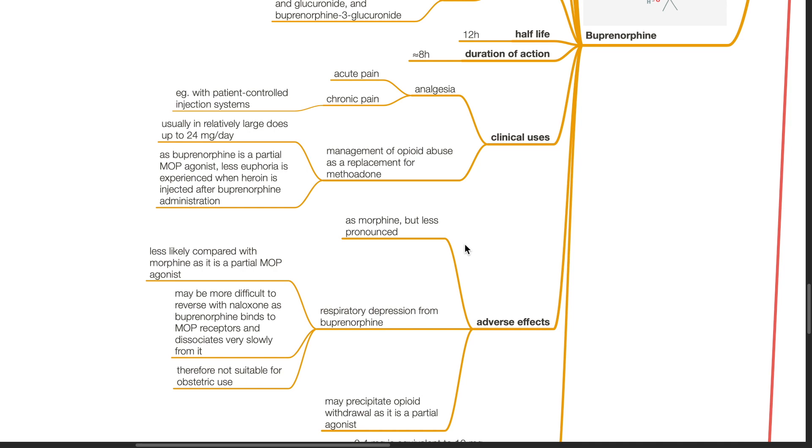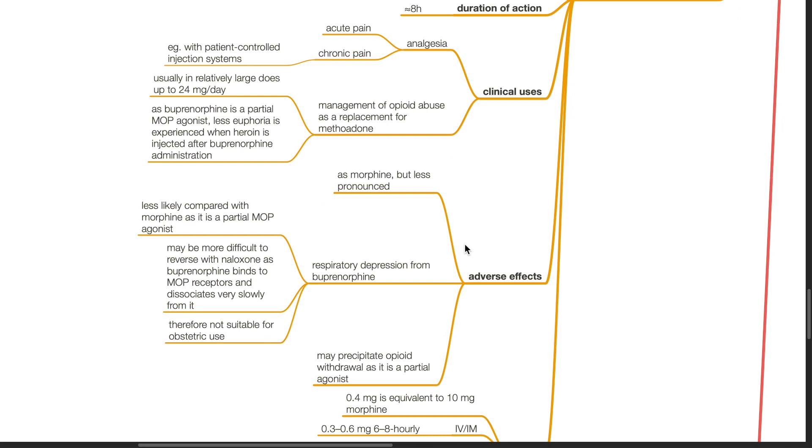Adverse effects as morphine but less pronounced. Respiratory depression from buprenorphine is less likely compared with morphine as it is a partial MOP agonist. But it may be more difficult to reverse with naloxone as buprenorphine binds to MOP receptors and dissociates very slowly from it. Buprenorphine may precipitate opioid withdrawal as it is a partial agonist.